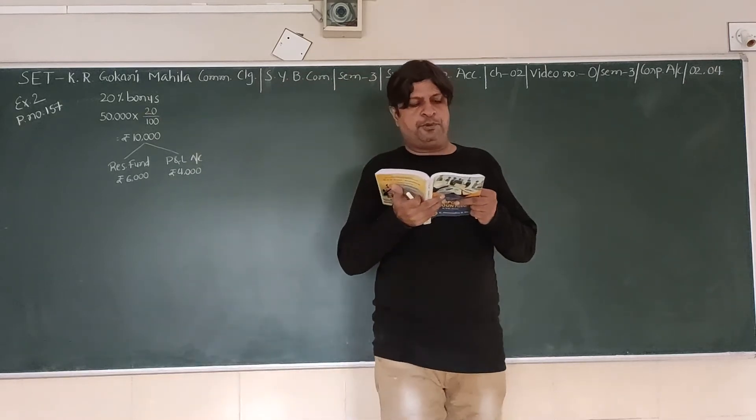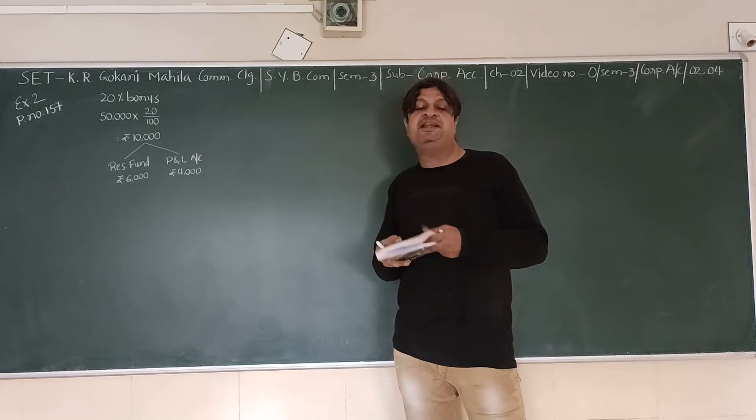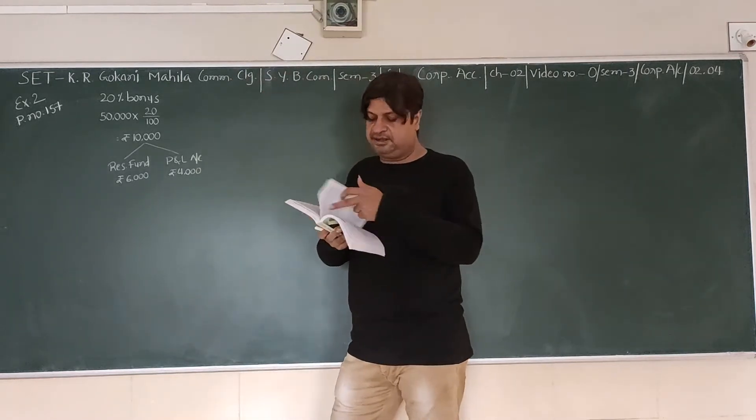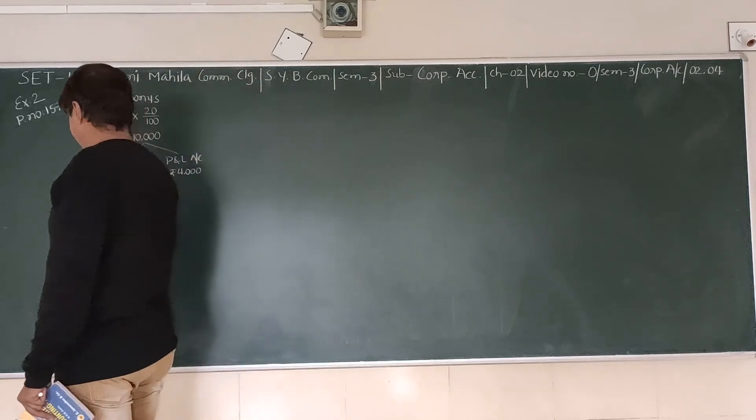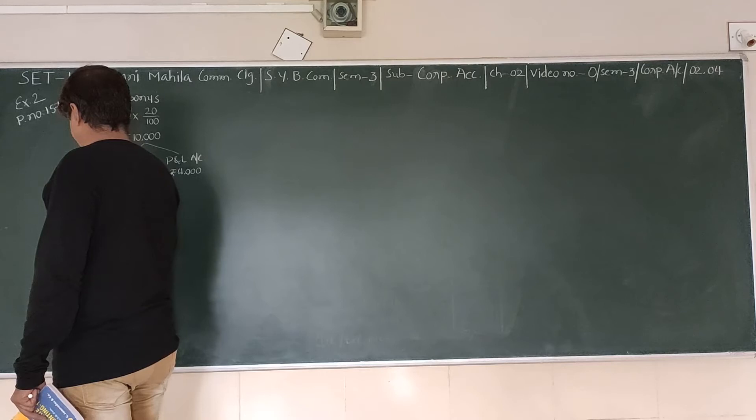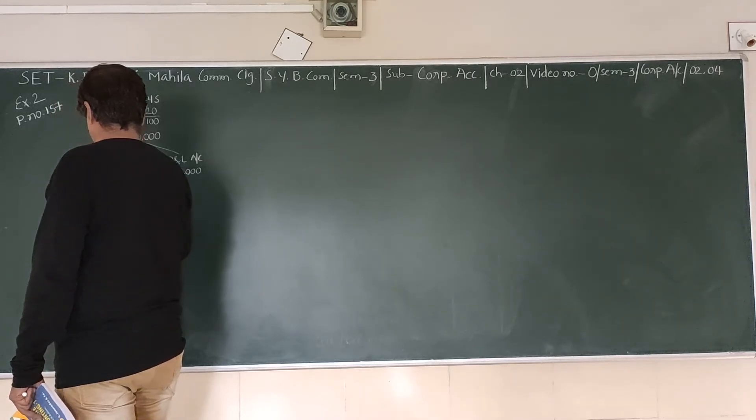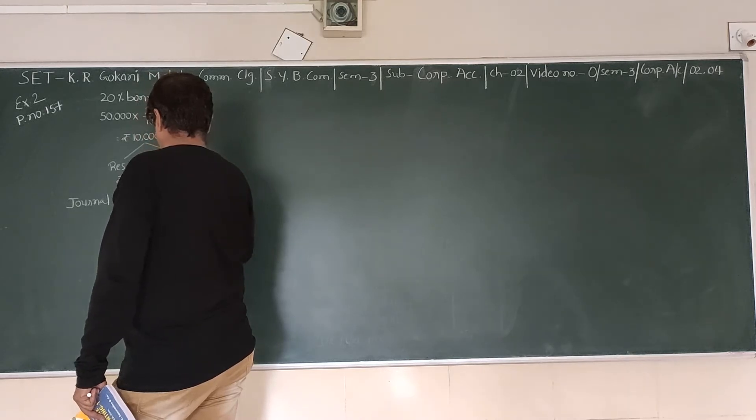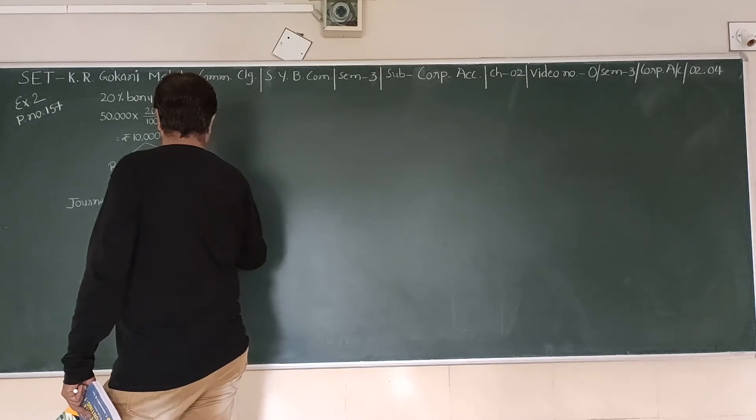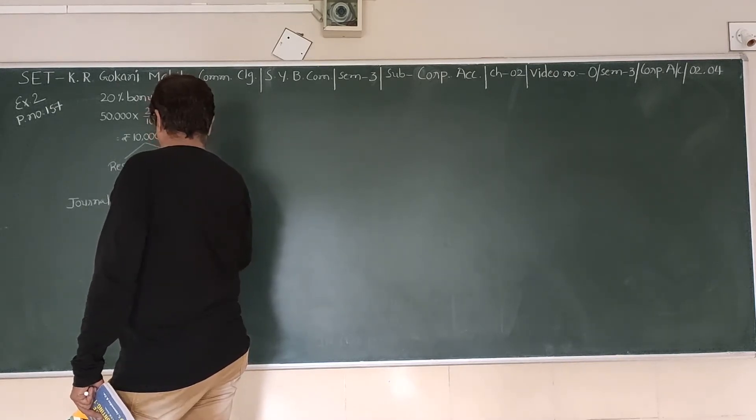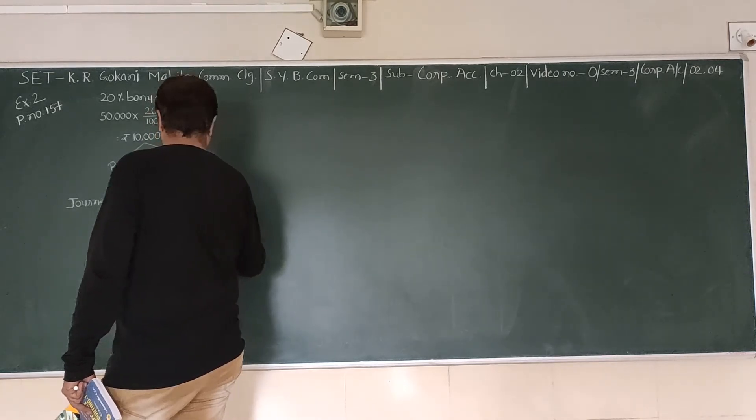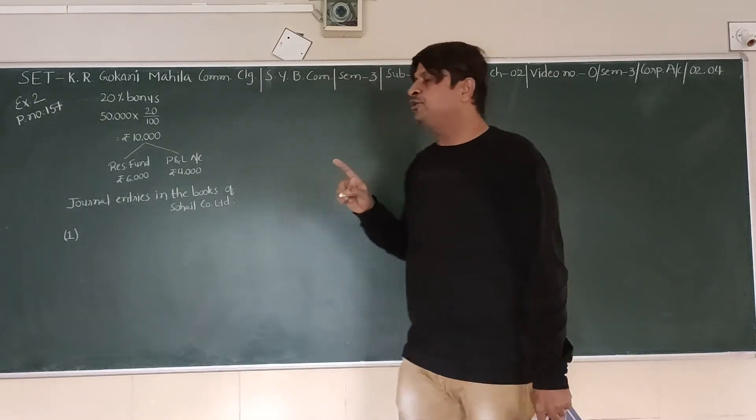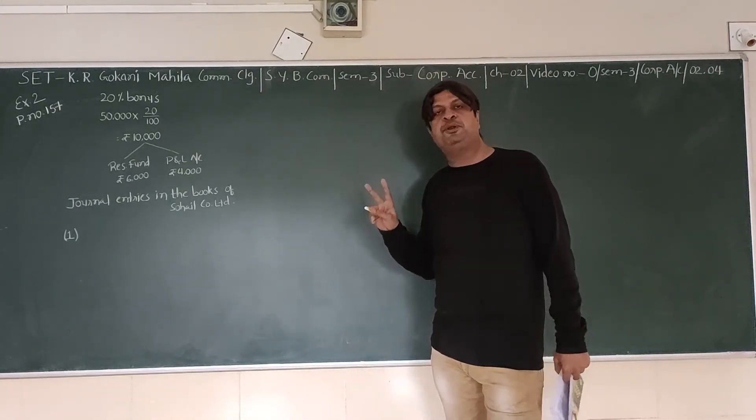Afterwards we are given that one fully paid up bonus share is given for 5 shares held. We are asked to pass necessary journal entries in the books. If we issue bonus shares, we need to give only two journal entries.